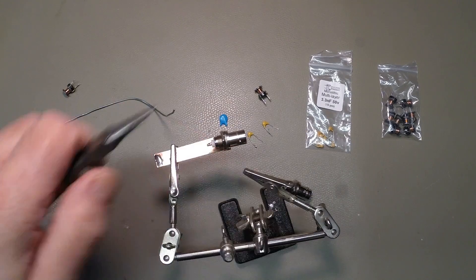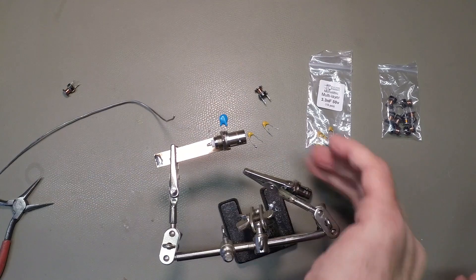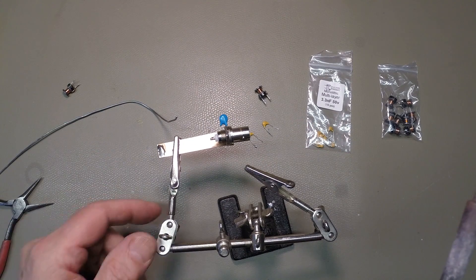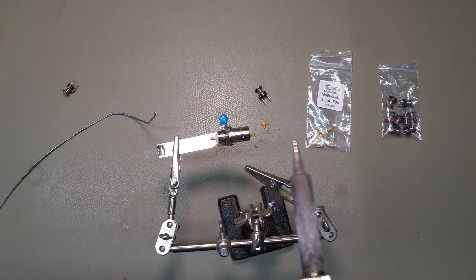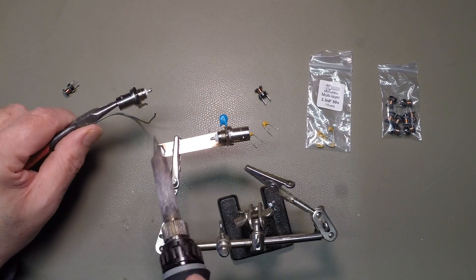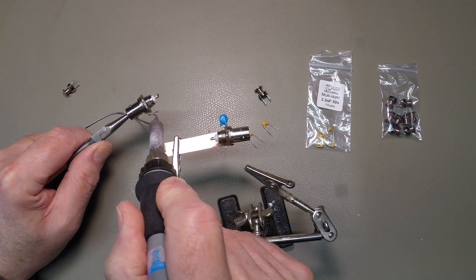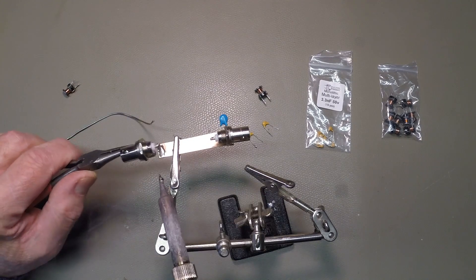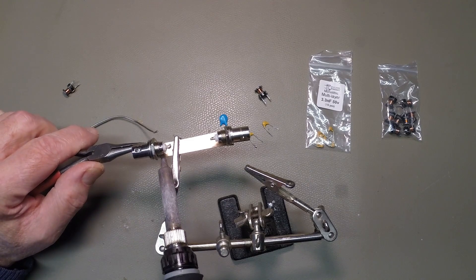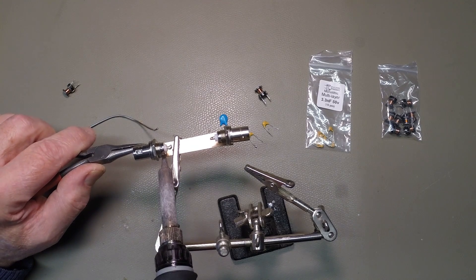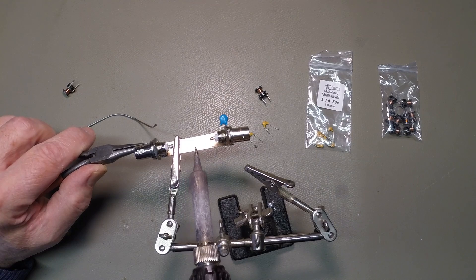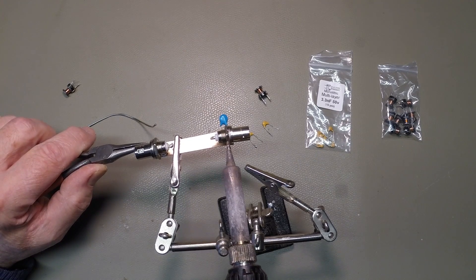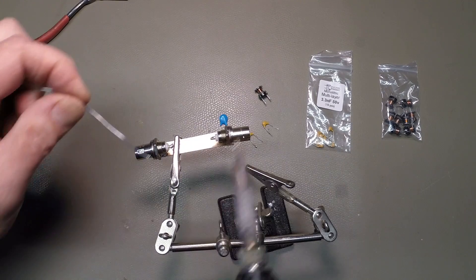I'll turn the helping hands around. These are a great investment. They cost literally a few pounds, I think five pounds or something like that, but they do make life a lot easier. So, I'll tin up this as well. Lots of smoke. And I'll solder that down to the laminate. Okay. So, that's the first part done.